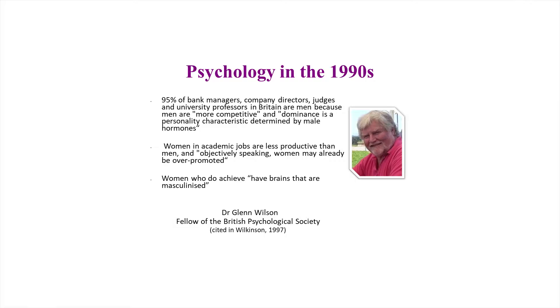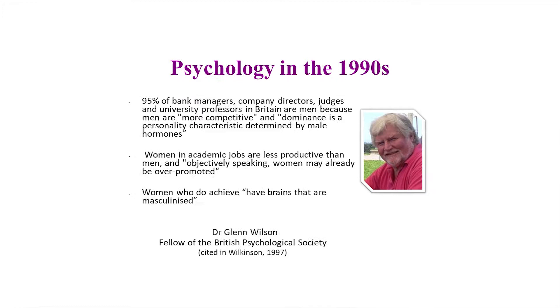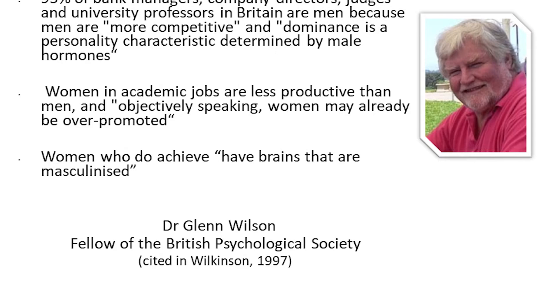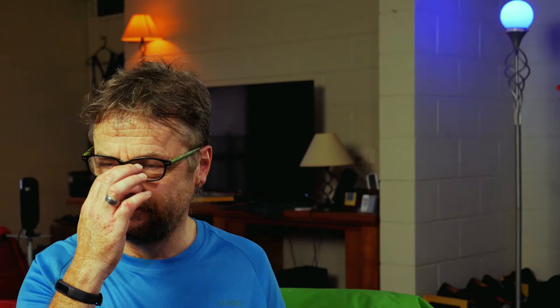Here's what Dr. Glenn Wilson, fellow of the British Psychological Society, was saying in the 1990s: that 95% of bank managers, company directors, judges, and university professors in Britain are men because men are more competitive and dominance is a personality characteristic determined by male hormones. He said women in academic jobs are less productive than men and, objectively speaking, may already have been over-promoted. He also said women who do have successful careers largely do so because their brains have become masculinized.